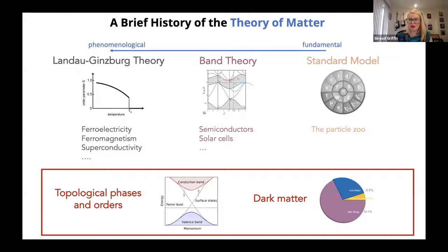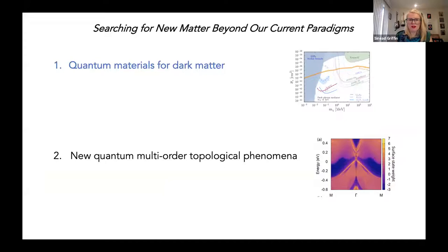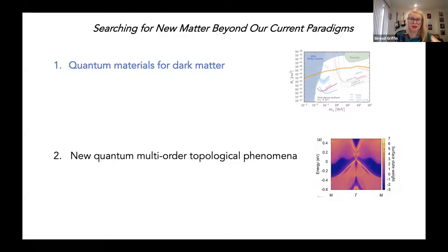In the first part I'll discuss how we can search for this new type of matter that goes beyond our conventional paradigms using theory, computation, and materials informatics — how we can design and suggest new phenomena and materials to discover dark matter. In the second part I'll discuss how we can design and understand topological phenomena and quantum phenomena that have lots of different order parameters, with lots of cross-couplings that have technological relevance.